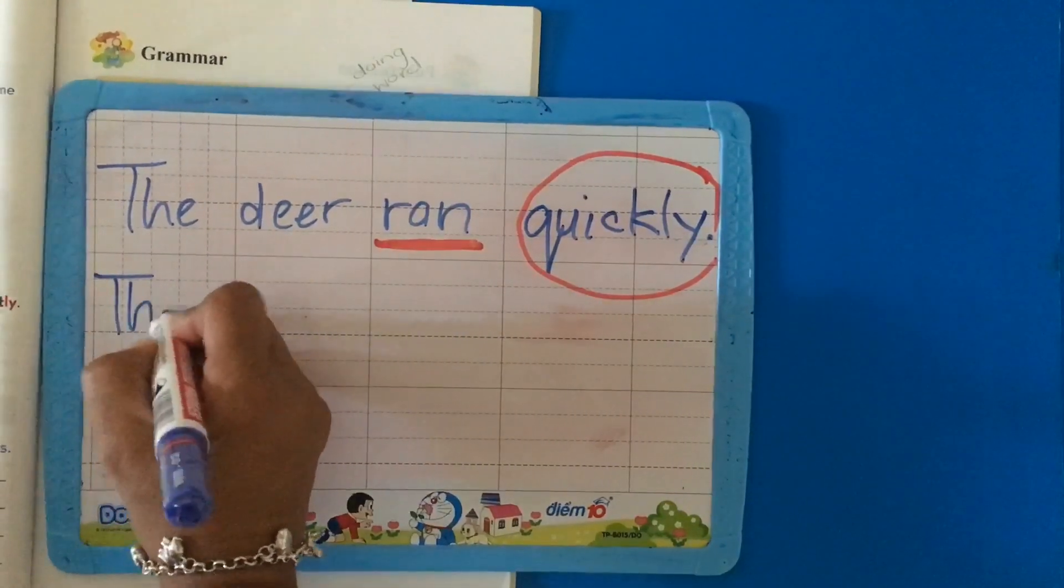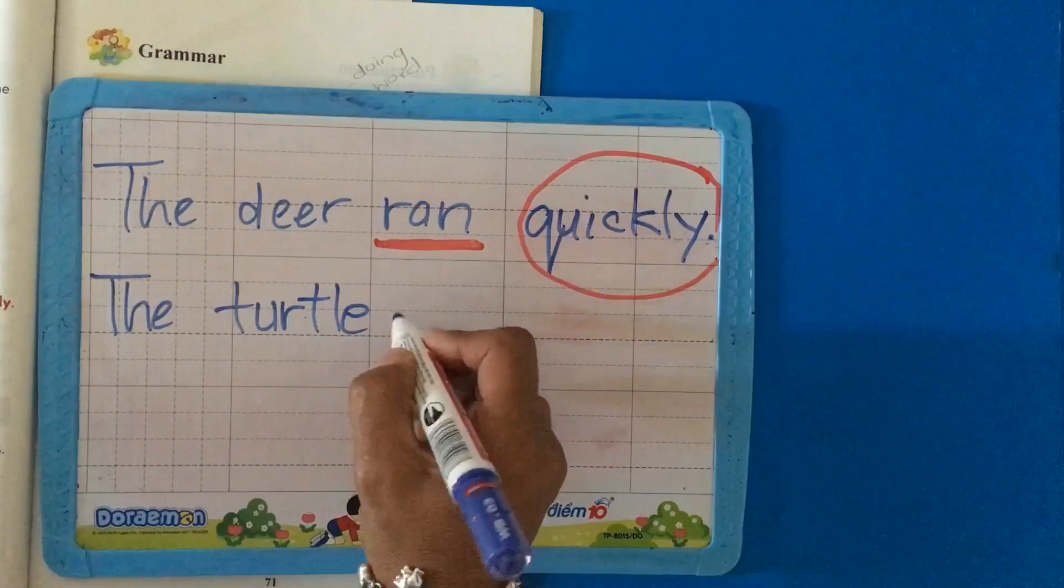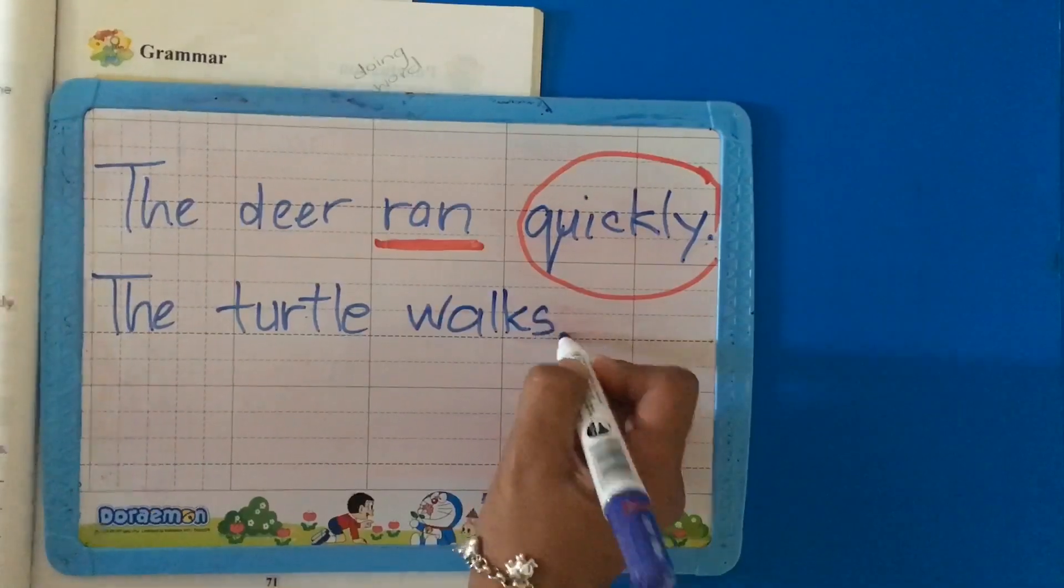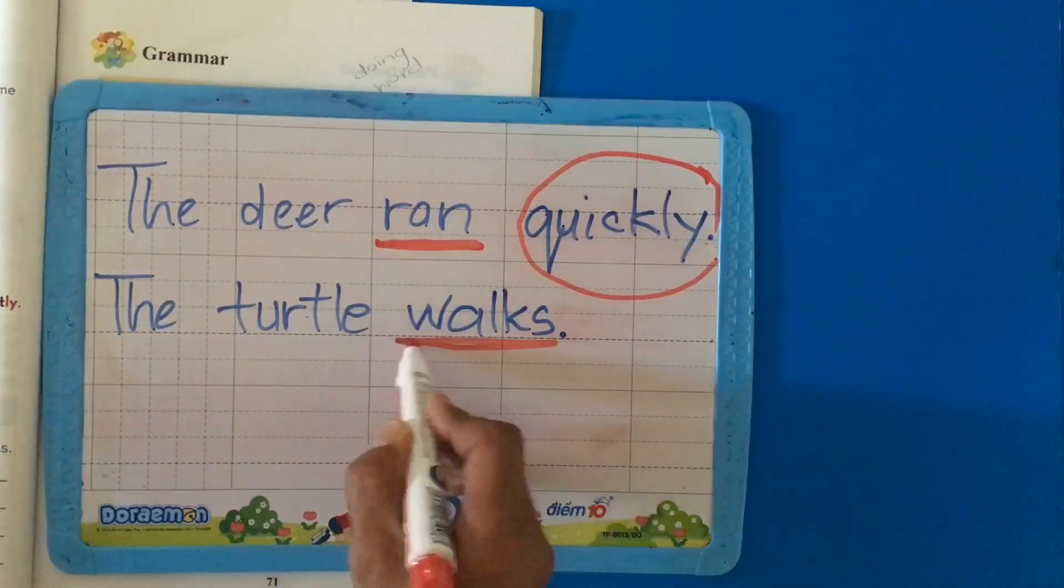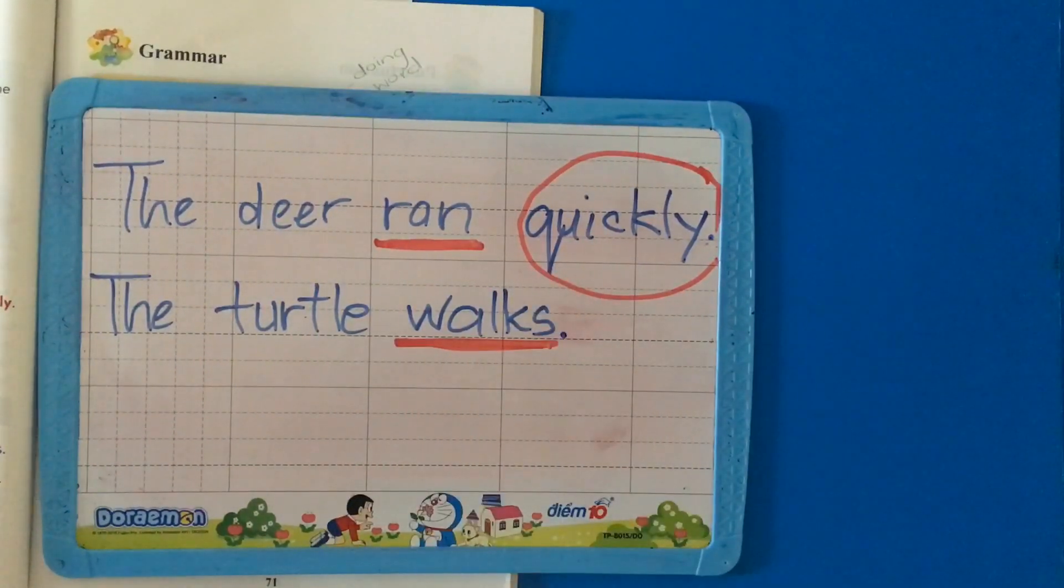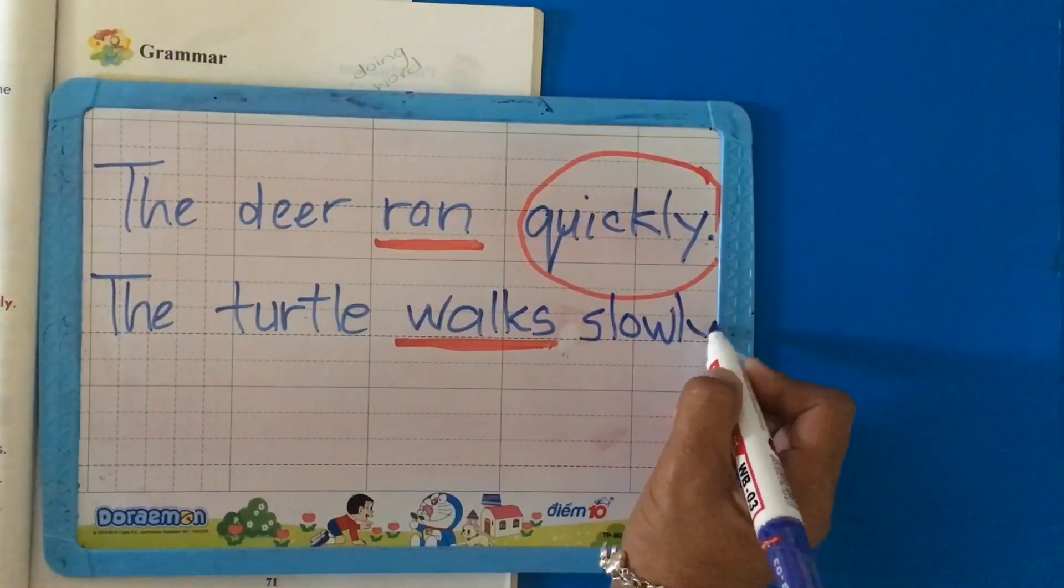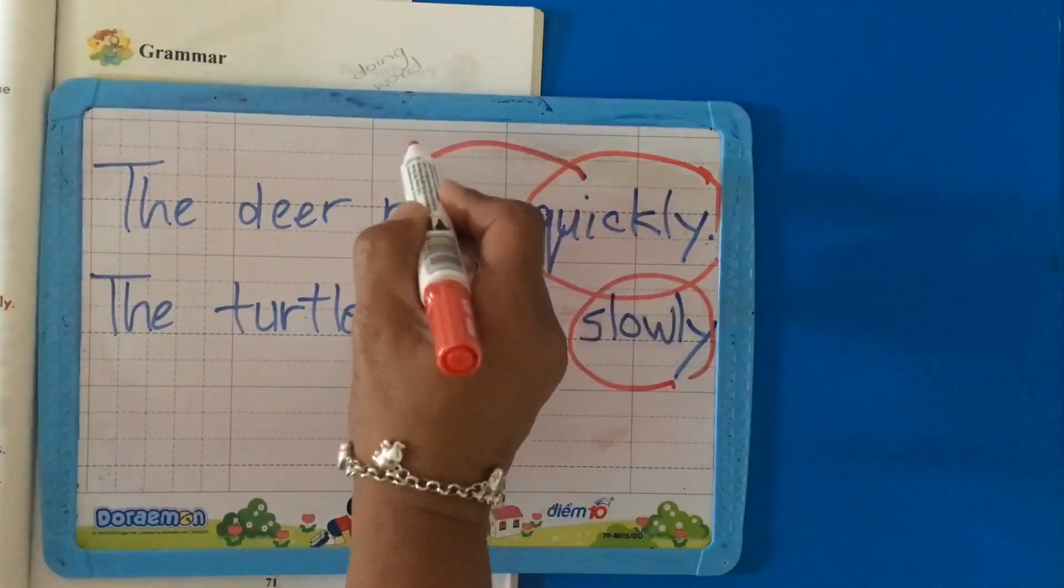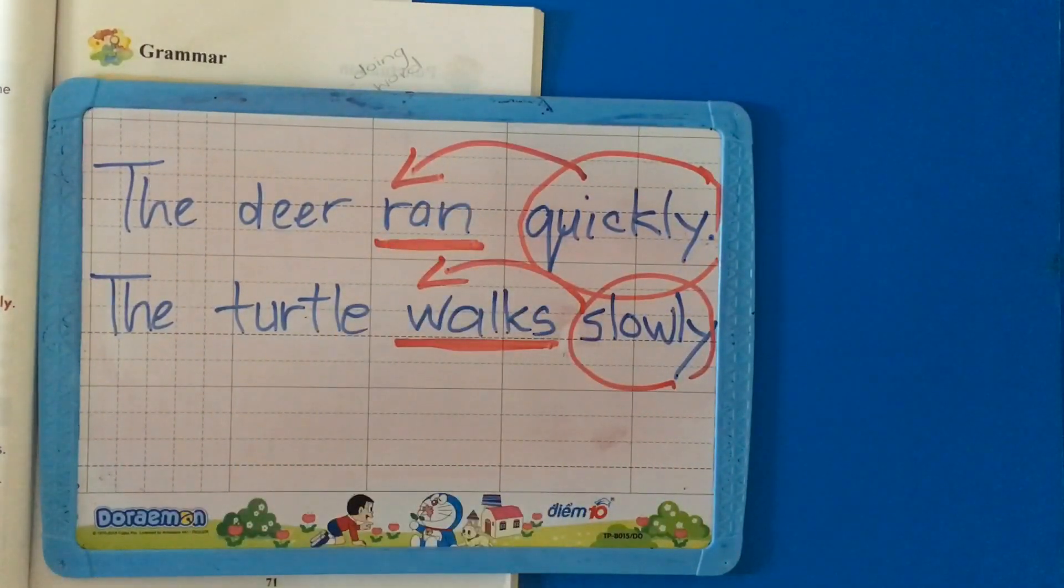The turtle walk. Who can find the verb for me? The turtle walks. The turtle's doing something right. Now, how does the turtle walk? The turtle walks slowly. So, slowly is our adverb. Quickly tells us something about ran and slowly tells us something about walks.